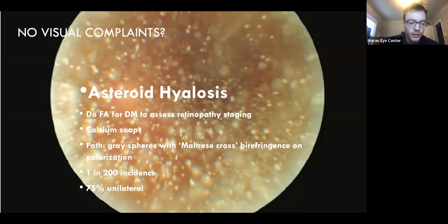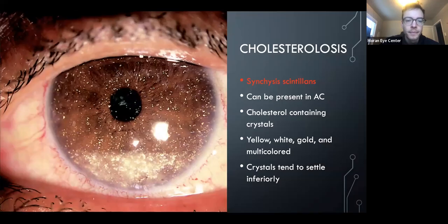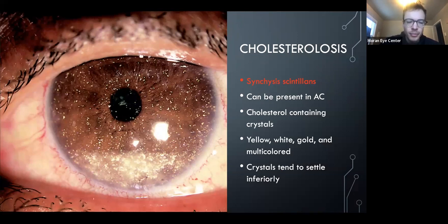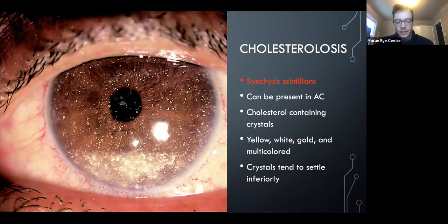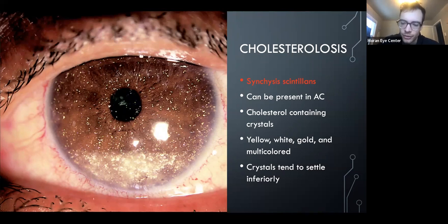Synchysis scintillans (cholesterolosis) can look like asteroid hyalosis, but it can appear in the anterior chamber, which asteroid hyalosis cannot. If you see this, check for systemic hypercholesterolemia.